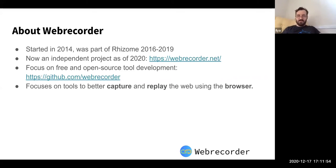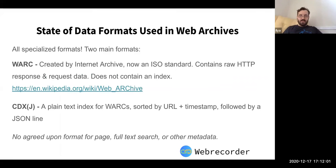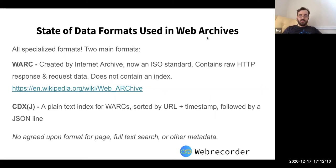Obviously important to web archiving is the actual web archiving data. So what is the state of data formats in web archives? We use very specialized formats. The main one currently is called WARC, which was created by the Internet Archive and is now an ISO standard. It basically contains the raw HTTP response and request data, does not contain an index — it just has the raw data.